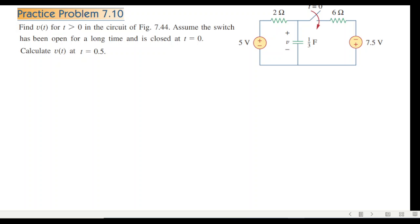Find v(t) for t greater than zero and v(t) at t equal to 0.5. V(t) at t less than zero is the initial condition.